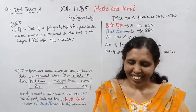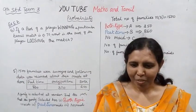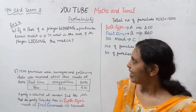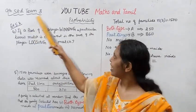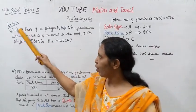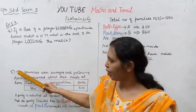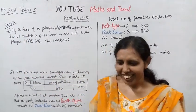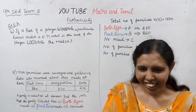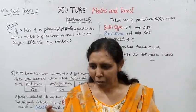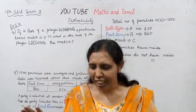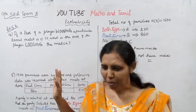Hello students, welcome to Maths and Travel channel. In the 9th standard, term 3 is probability, exercise 5.2. Now, 9th standard term 3 covers all chapters: algebra, coordinate geometry, trigonometry, mensuration, and probability.